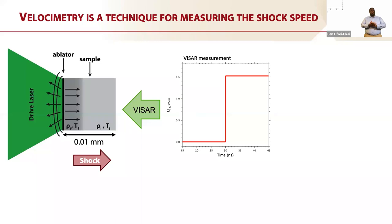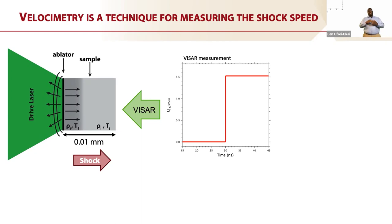Scientists have developed a technique for measuring the shock wave velocity called VISAR — velocity interferometry system for any reflector. The way it works is that you take a low energy green laser and shine it on the other side of the sample. The sample reflects light the whole time, and when the shock wave moves and hits that interface, you see a change in how that light is reflected. Based on that change, you can infer the velocity of the shock wave moving through the sample. This is a technique we use all the time in characterizing our shocks.